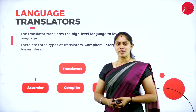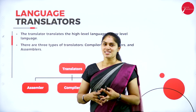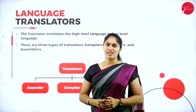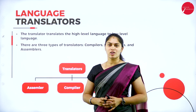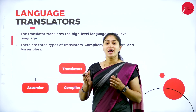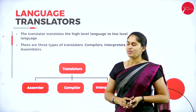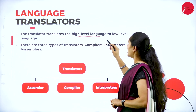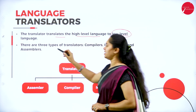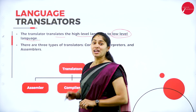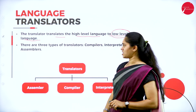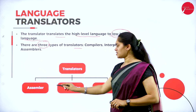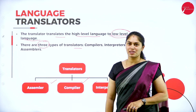Today's session is all related to language translation. As discussed, computers can understand only binary language or machine level language, dealing with zeros and ones. To do translation from high level or assembly level language, we have language translators. There are three types of translators: assembler, compiler, and interpreter.